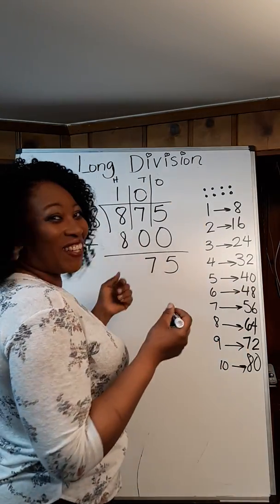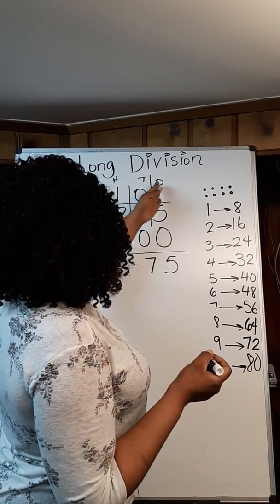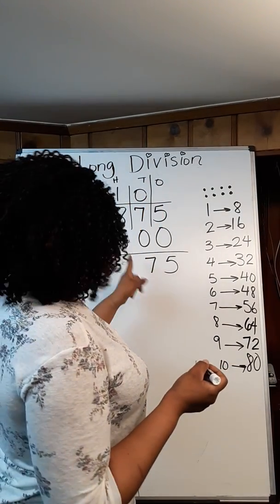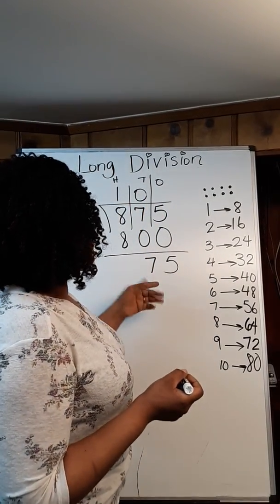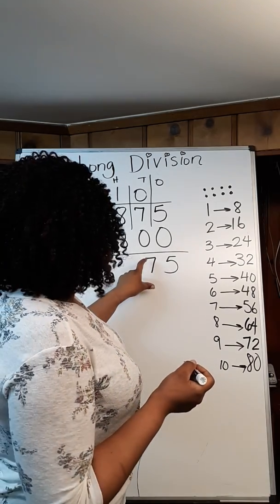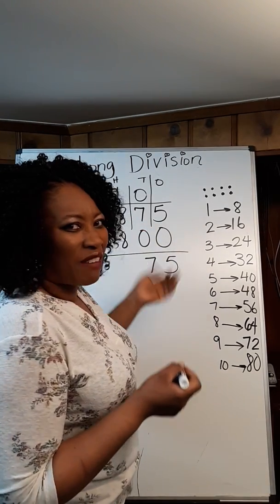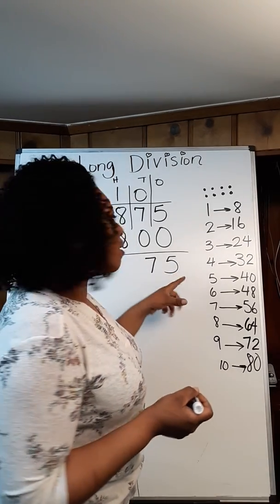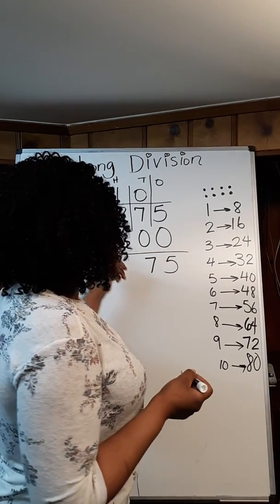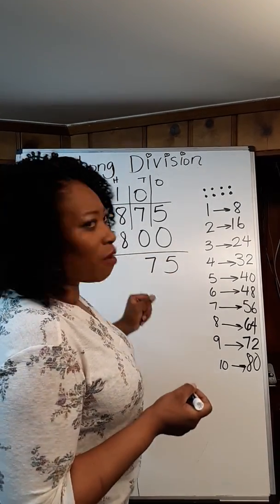I'm going to do my next place value, which is the ones. Now I have 75 ones. Basically what I did, I had seven tens. I didn't have enough. I got to change those tens into ones. So now I have 75 ones.